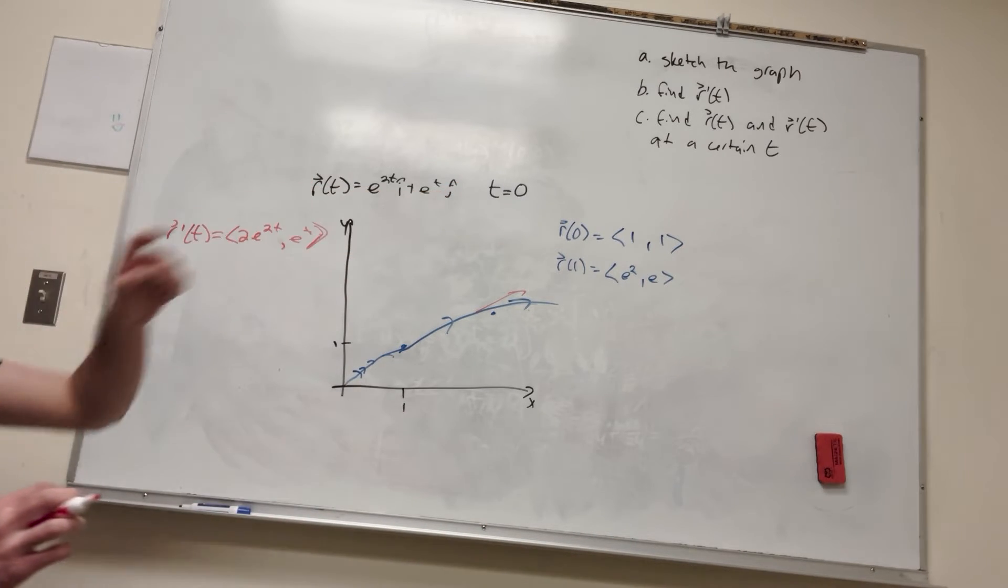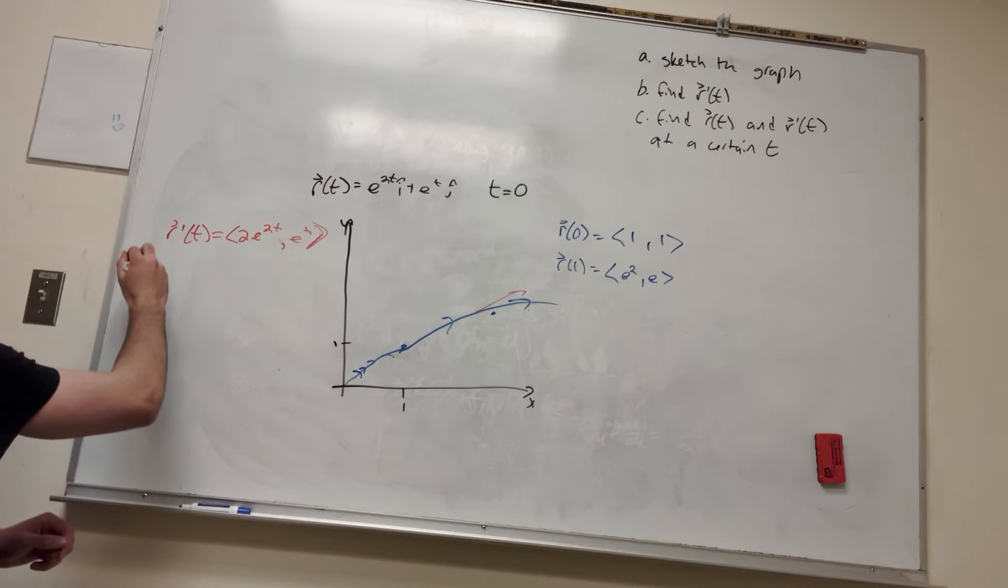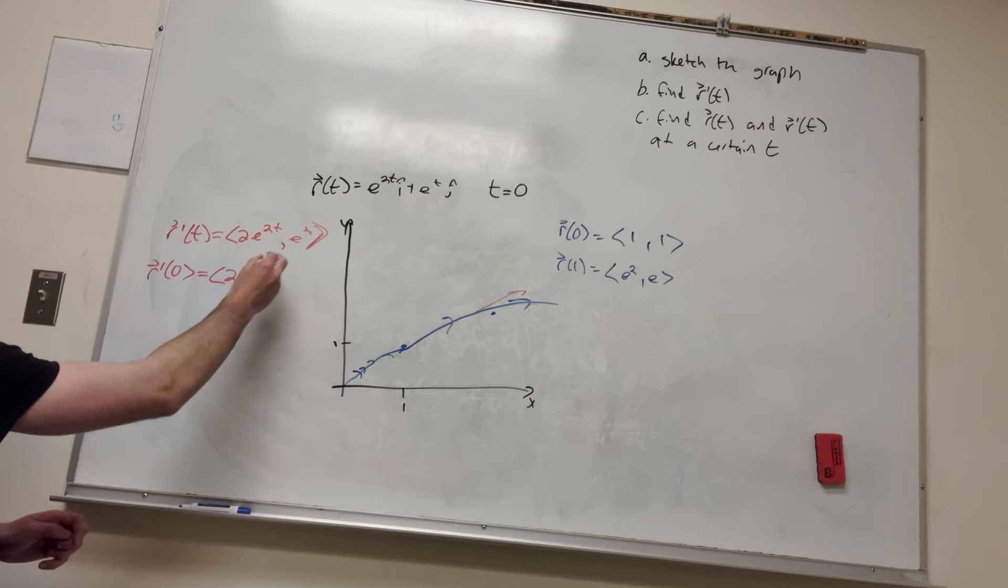So it wants us to find r prime of t at a certain point of t. Let's say r prime of 0. It's going to be equal to 2e to the 0, so it's going to be 2, and then e to the 1.